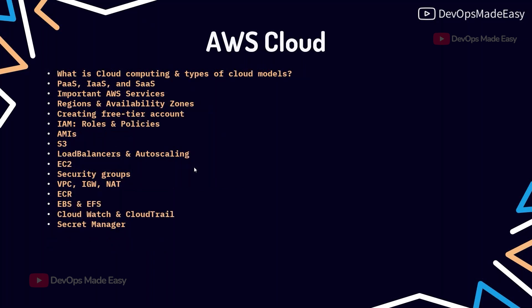For AWS cloud, we cover core services including what cloud computing is, different cloud service models, important AWS services, regions and availability zones, creating an AWS account, IAM, S3, load balancers, auto scaling, EC2, ECR, EBS, security groups, VPCs, CloudWatch, CloudTrail, and Secret Manager.